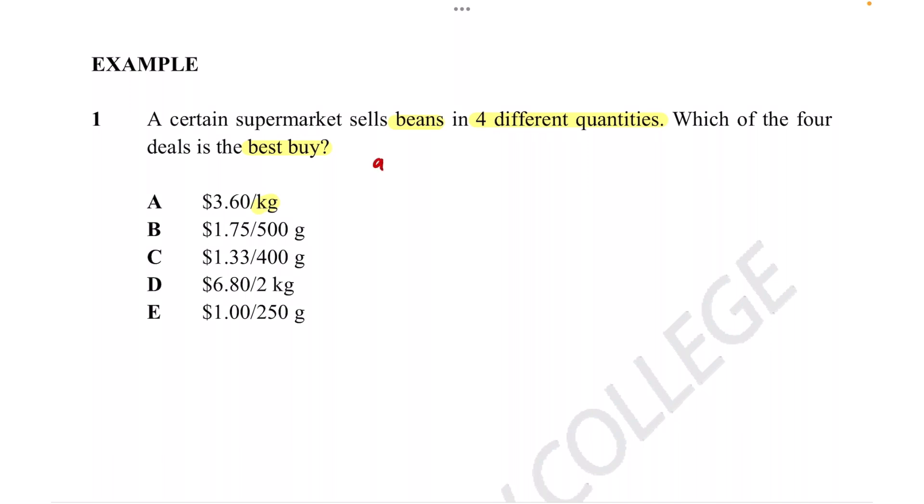So shop A, we already know that's $3.60 per kilogram, so we don't need to change anything. Let's do B. Shop B has $1.75 per 500 grams. So in order to change this into kilograms, we times 2 on each side because we know 500 grams times 2 is a kilogram. So we go 1.75 times 2 per kilogram.